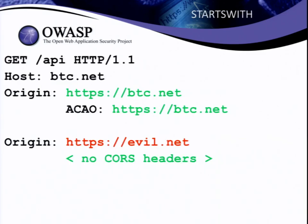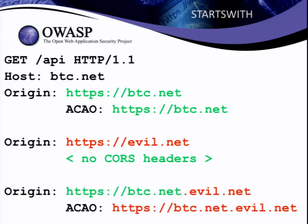I found a completely different unrelated Bitcoin exchange that does some basic steps to decide what origins are trustworthy. I can't name them, but let's say they're called btc.net. They validate that the origin starts with btc.net — so if you approach from evil.net they won't send CORS headers back. But of course, you can come from btc.net.evil.net, and they go, yeah, that sounds trustworthy.